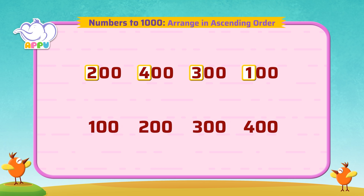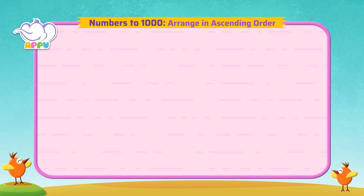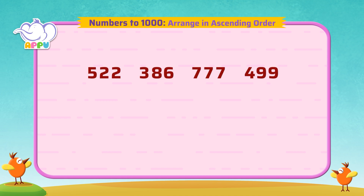Now you're flying! Arrange these numbers in ascending order: 522, 386, 777, 499.